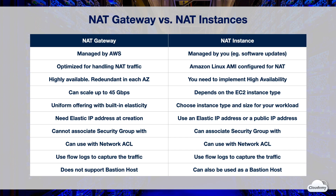NAT gateway doesn't support security groups — you cannot associate security groups with a NAT gateway. However, you can associate security groups with your resources behind the NAT gateway to control inbound and outbound traffic. You can associate security groups with NAT instances and the resources behind NAT instances to control inbound and outbound traffic. Both NAT gateway and NAT instances support network ACL — you can use a network ACL to control traffic to and from the subnet in which your NAT gateway or NAT instances reside. You can use VPC flow logs to capture traffic to or from the NAT gateway or NAT instances. A NAT instance can also be used as a bastion host, but you cannot use a NAT gateway as a bastion host.